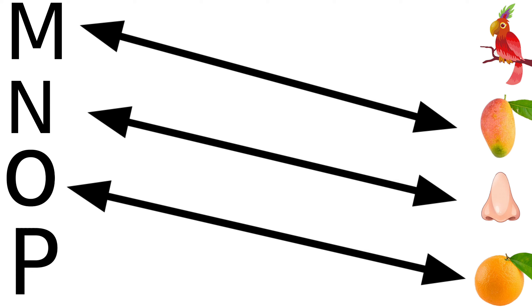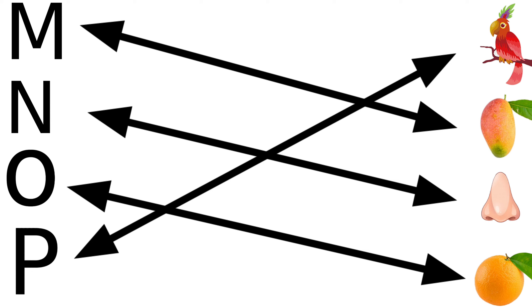M for mango, N for nose, O for orange, P for parrot, Q for queen, R for rose.